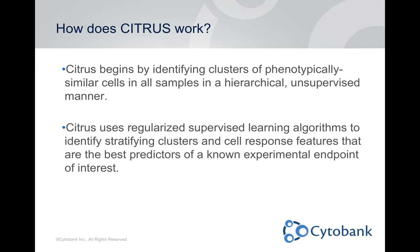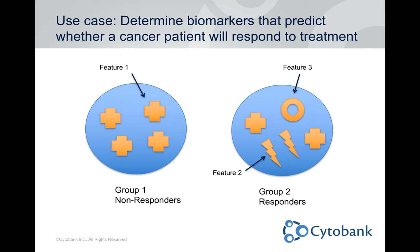Citrus begins by identifying clusters of phenotypically similar cells in all the samples in the experiment in a hierarchical, unsupervised manner. This step is very similar to SPADE — it goes through and puts similar cells across whatever dimensions you select into nodes, then puts those nodes onto a tree structure. After that, it uses regularized supervised learning algorithms to identify stratifying clusters and cell response features that are the best predictors of a known experimental endpoint, looking at which nodes change between the two groups and which show the biggest difference, either in medians or in abundance.